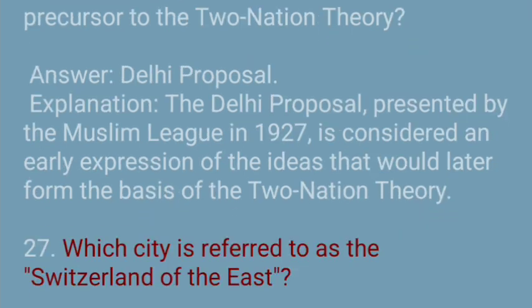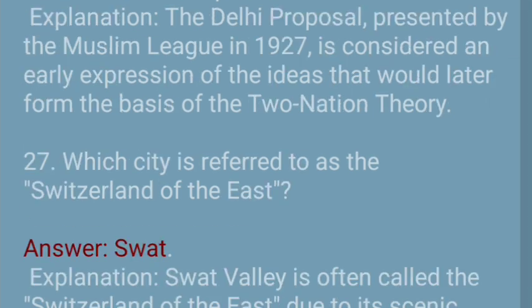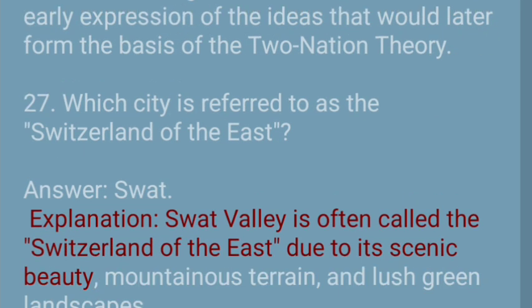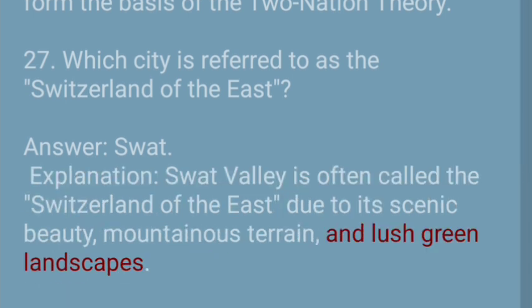Question 27: Which city is referred to as the Switzerland of the East? Answer: Swat. Explanation: Swat Valley is often called the Switzerland of the East, due to its scenic beauty, mountainous terrain, and lush green landscapes.